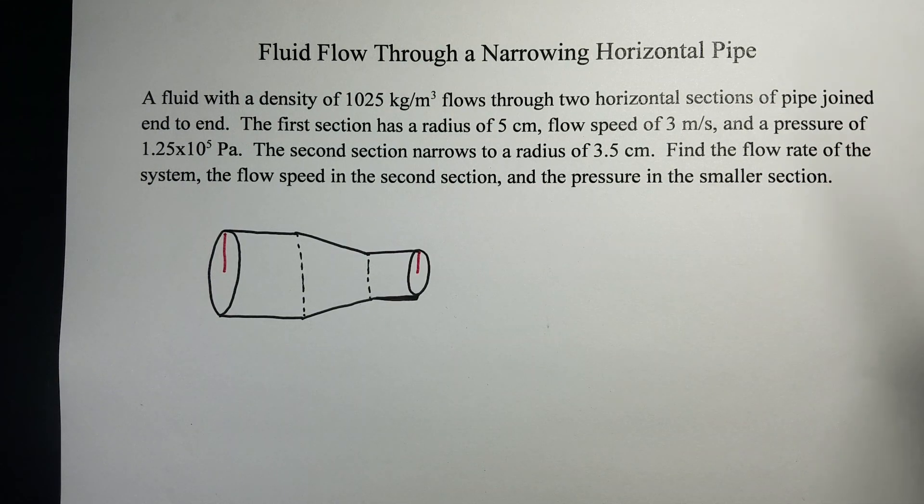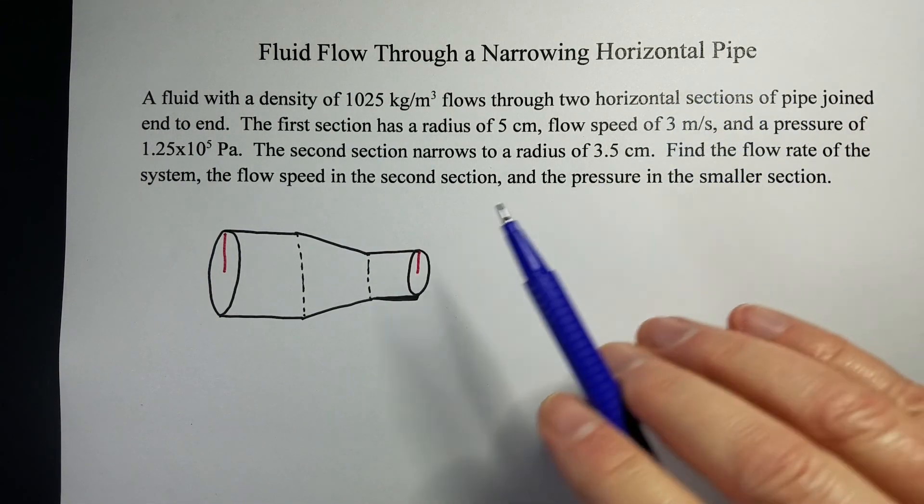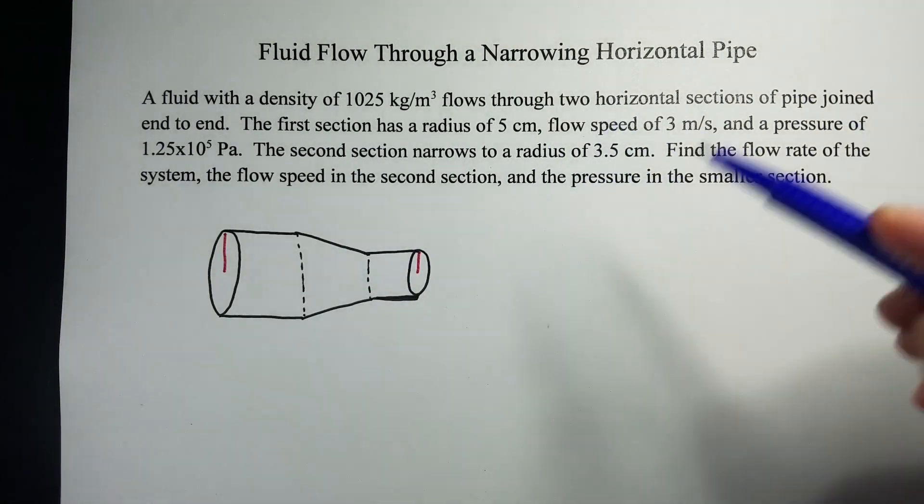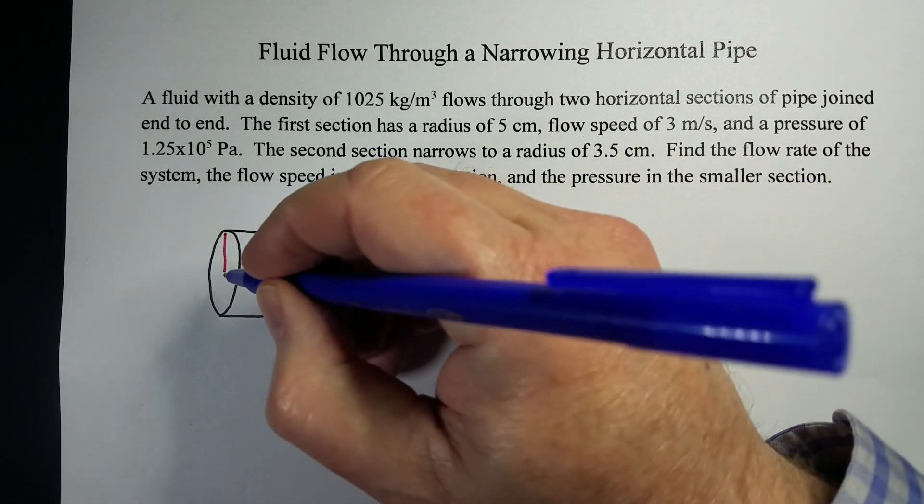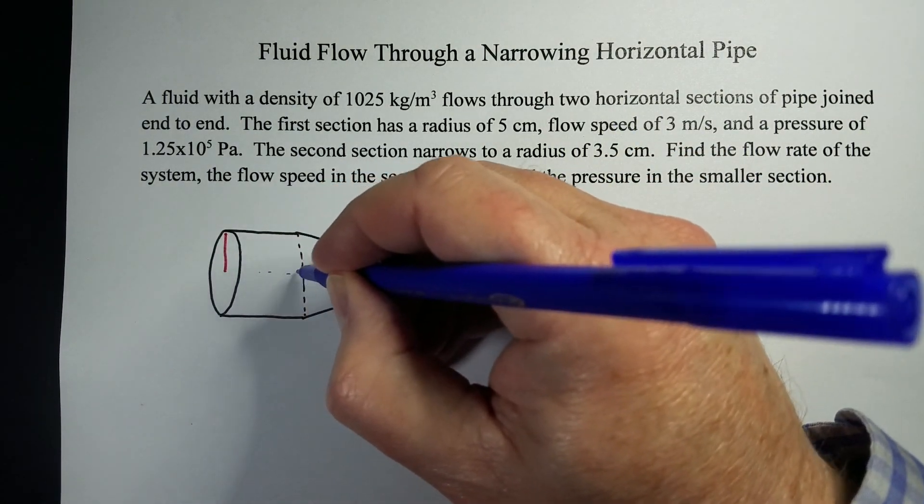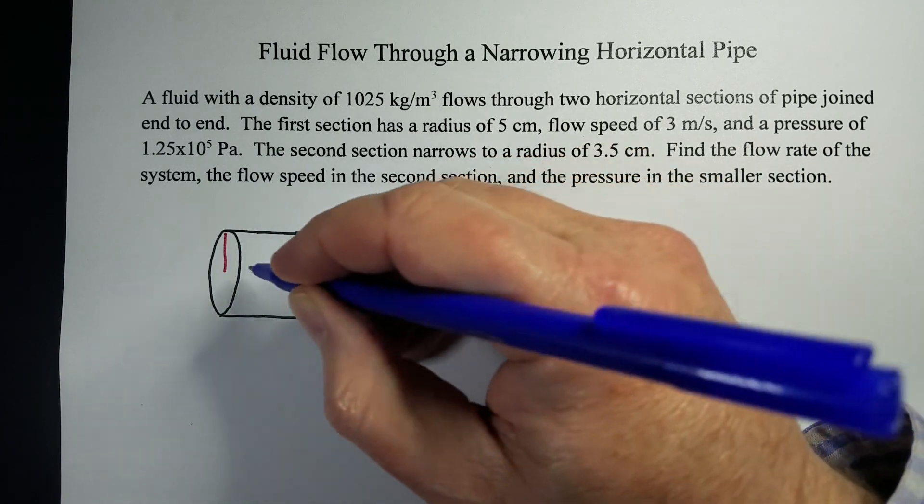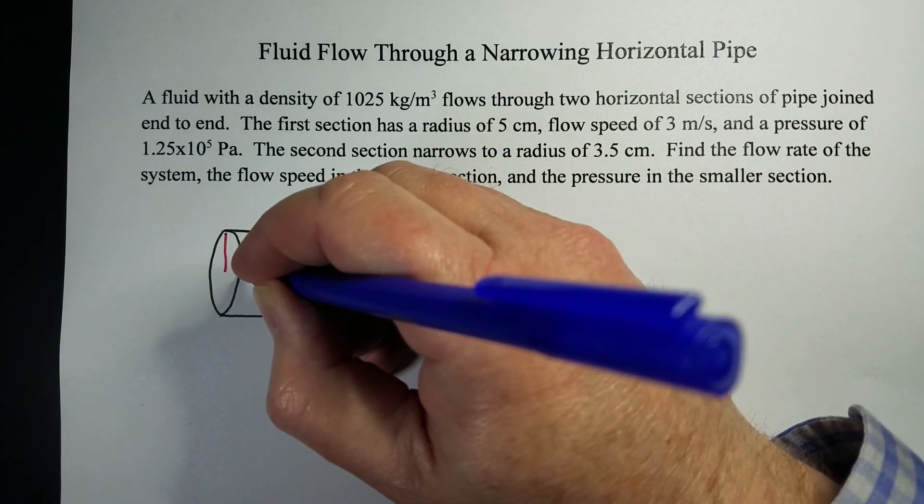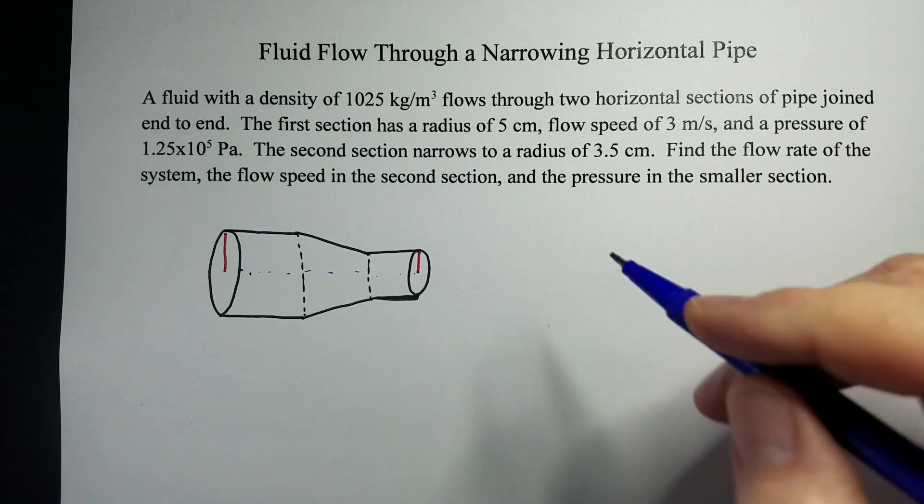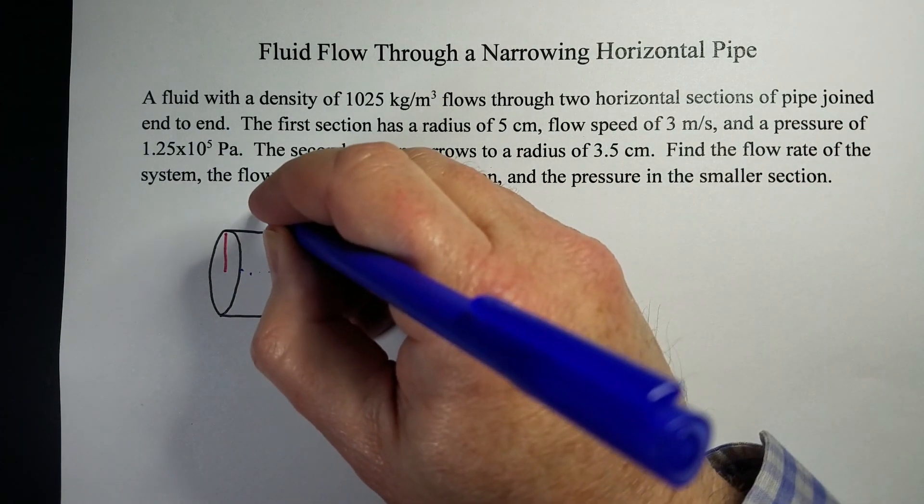Hi, this is Kayleigh, and let's talk about fluid flowing through a pipe, specifically a horizontal pipe that just narrows as it goes through. So since it's horizontal, the middle of the pipe stays at the same height. It just tapers down as it goes through. And so at one end, we're going to call it section one.